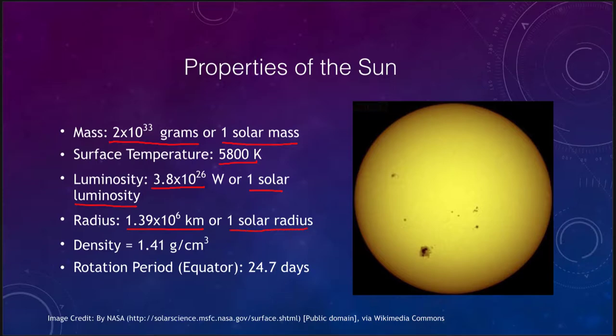We do the same thing with the radius, a very large number of kilometers but we can call that one solar radius. In terms of density, the density is actually less than that of the Earth. The density is only 1.4 grams per cubic centimeter, comparable to the densities of the giant planets, however it is significantly larger in terms of mass and size.